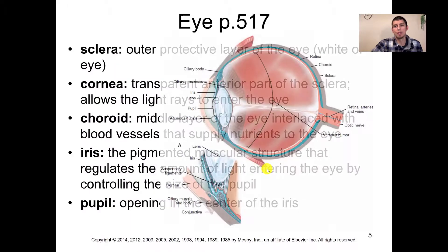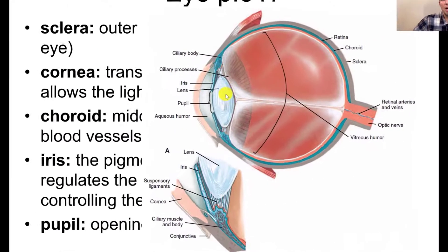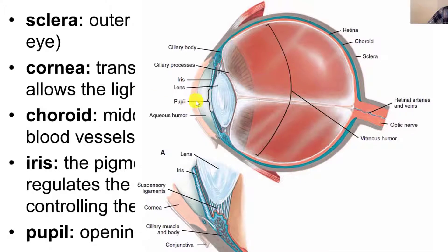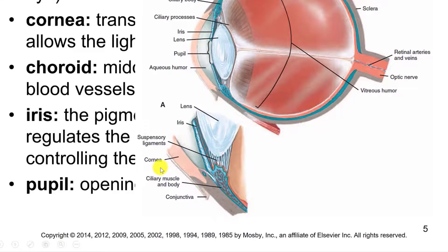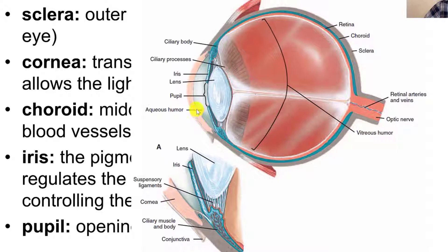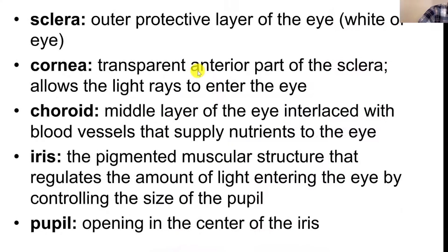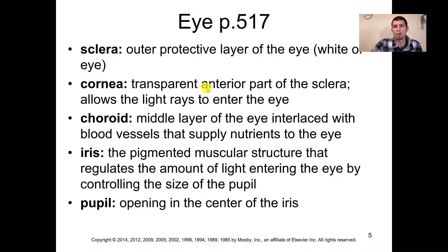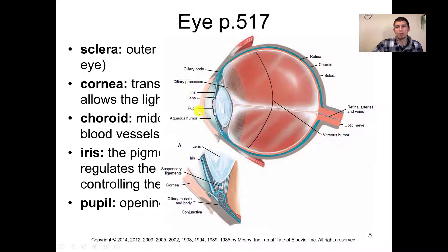The cornea is the transparent front section of the eye that allows light to actually come in through it. You can see down here on the bottom figure it's blown up a bit, showing you the corneal section. The cornea is that outermost protective layer of the eye — it's the transparent layer of the sclera. You can see the sclera coming around and then switching over to that transparency.